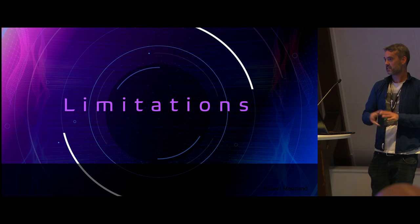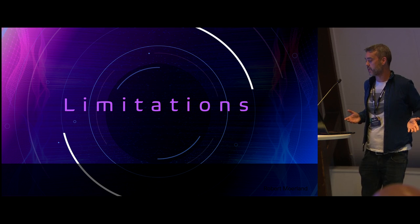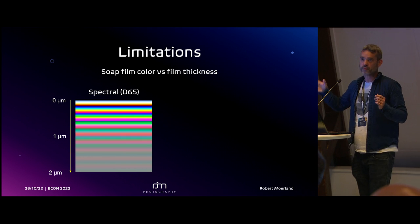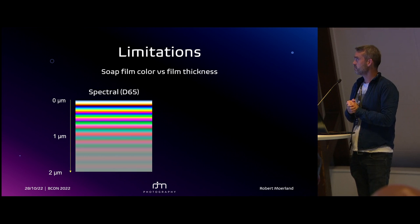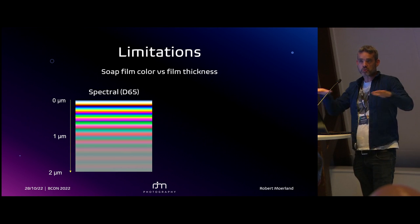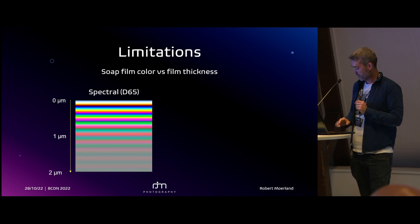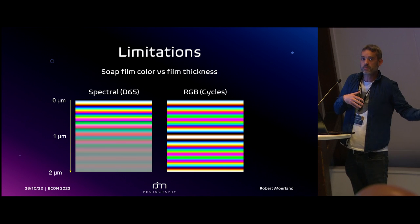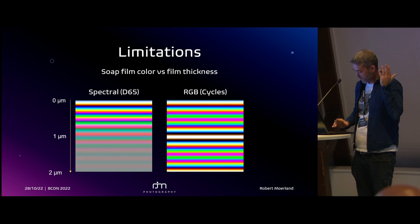Now, limitations — I said I made it physically correct to the best of my capabilities, but there are limitations in a renderer based on RGB. On the left you see the soap film color as a function of soap film thickness for what would be a spectral renderer, using the D65 white point. Initially you see color banding, but as the film becomes thicker you get a sort of gray reflection — exactly what we expect, since thick glass reflects white and not colored. The Cycles RGB implementation will just keep going and never converge to that gray, but since this is thin film interference, if you go to a millimeter thickness it's not really thin film anymore. Up to about 700 nanometers (0.7 micron) it's pretty much the same as a spectral renderer, at least visually.